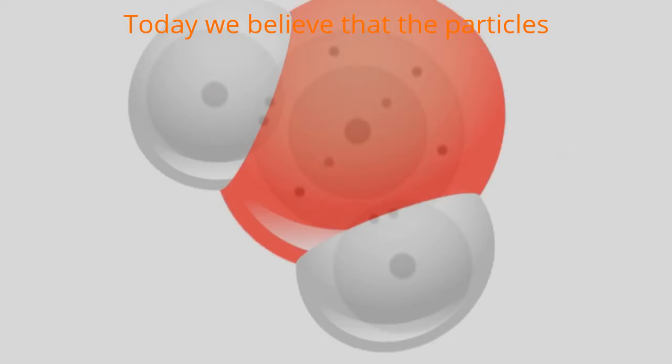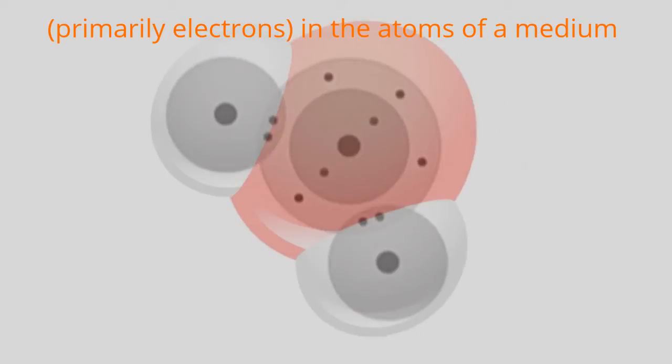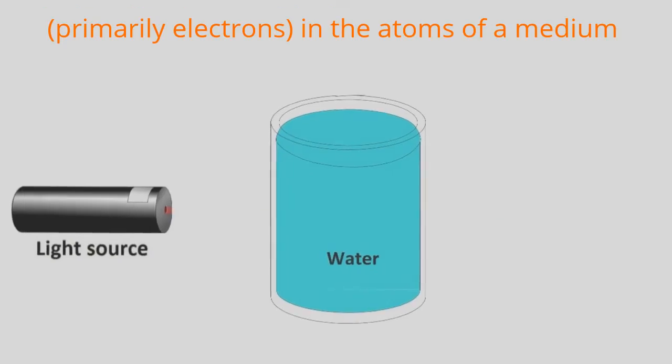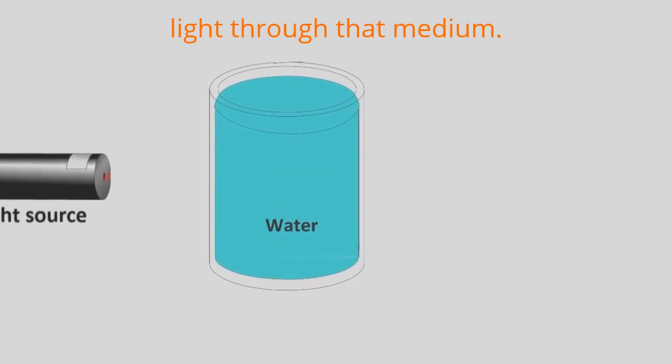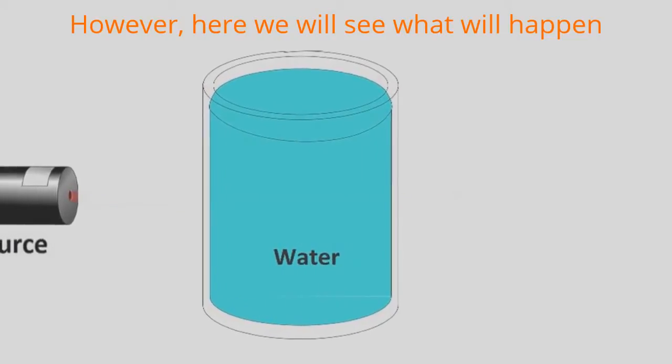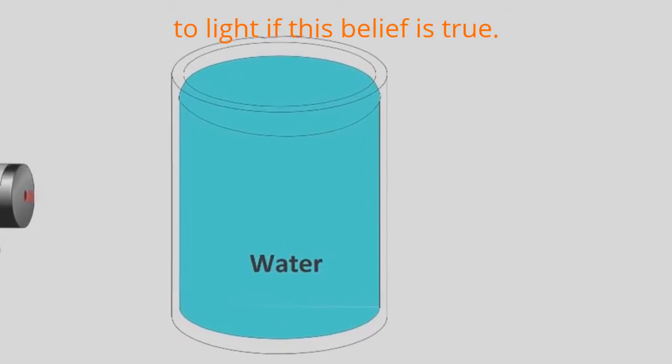Today we believe that the particles, primarily electrons, in the atoms of a medium are involved in the propagation of light through that medium. However, here we will see what will happen to light if this belief is true.